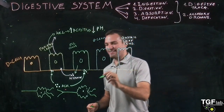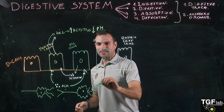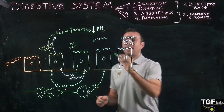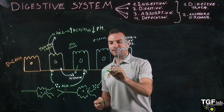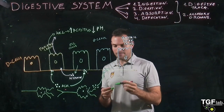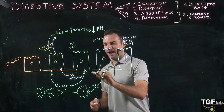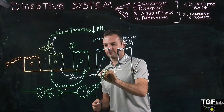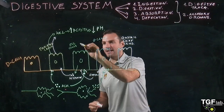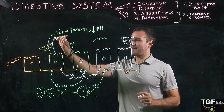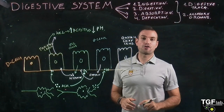Acetylcholine also activates the G cells. Through binding to the acetylcholine receptors of the G cells, these G cells secrete a hormone called gastrin. This gastrin then activates the ECL cells so they produce more histamine, which in turn further activates the parietal cells and increases the secretion of hydrochloric acid.